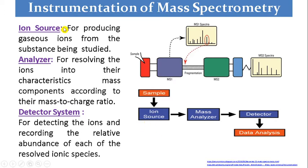Ion source is for producing gaseous ions from the substance being studied. Mass analyzer is for resolving the ions into their characteristic components according to their mass-to-charge ratio.